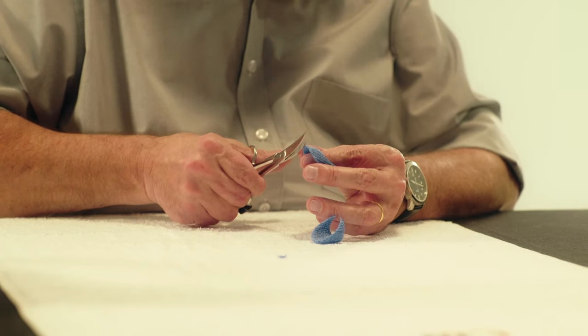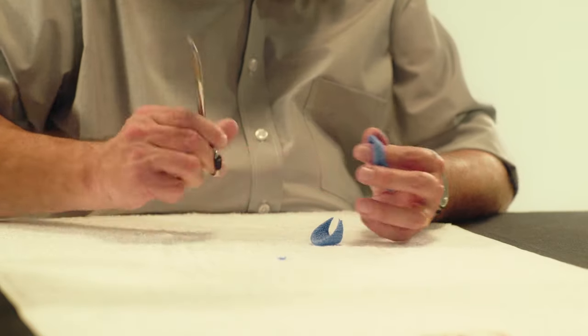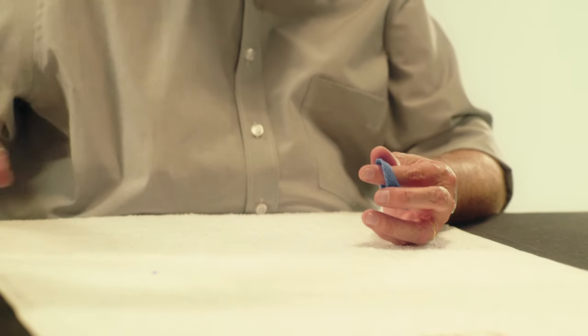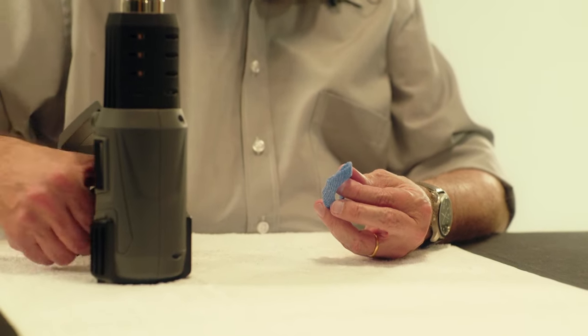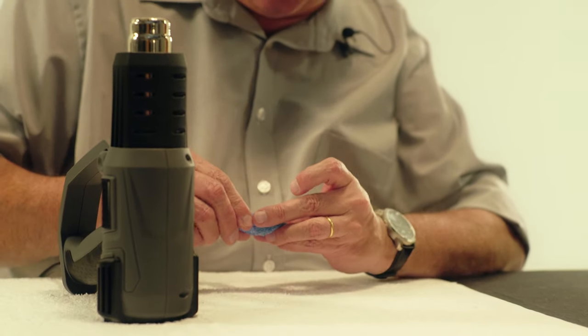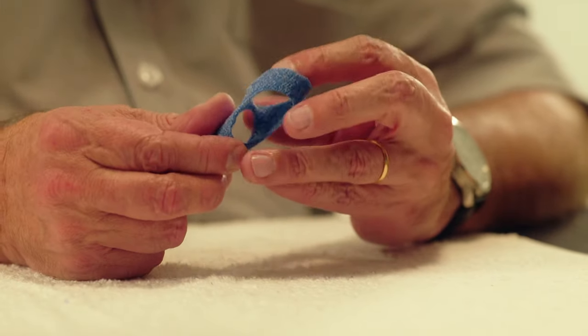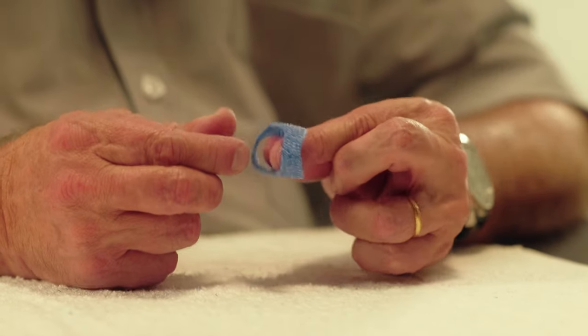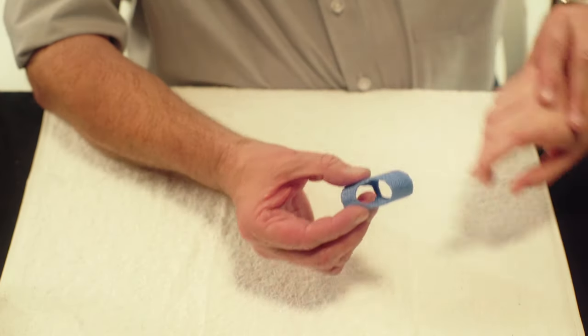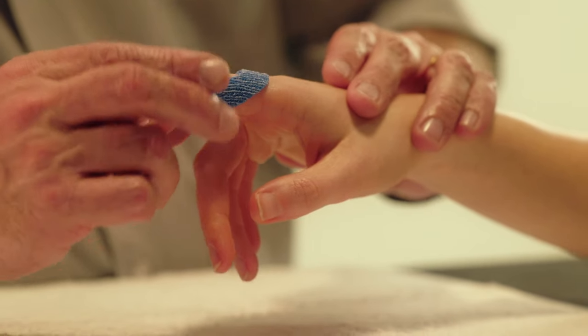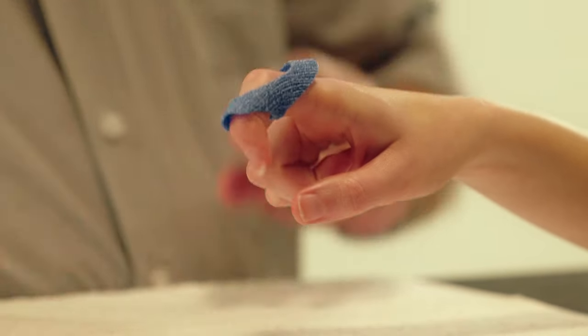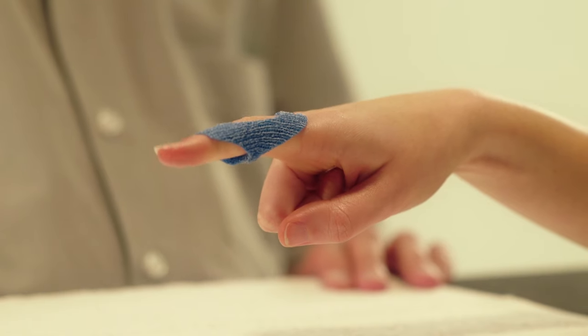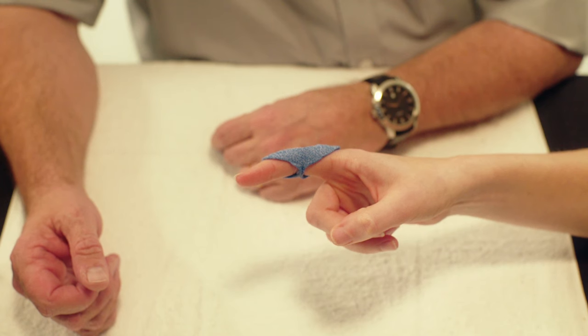Heat the material covering the flexion crease of the PIP joint with a heat gun and slightly pinch together. The orthosis can now be fitted onto the patient's finger. The orthosis should allow almost full flexion but prevent hyperextension of the PIP joint.